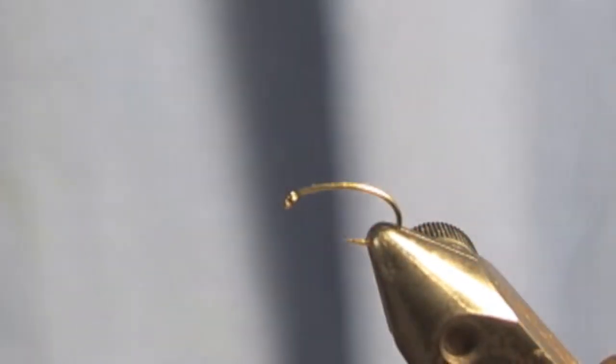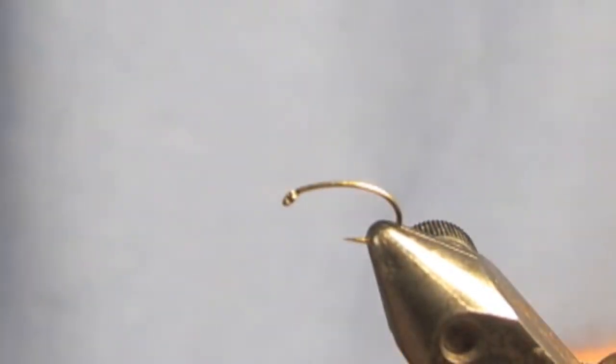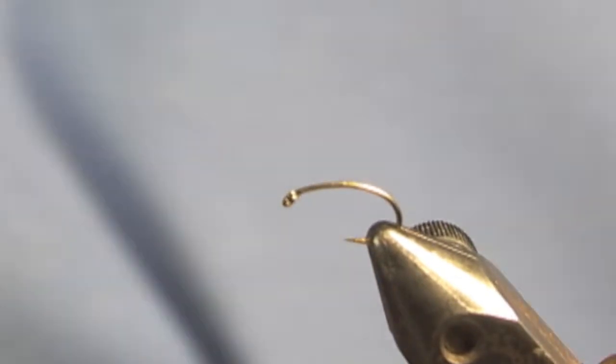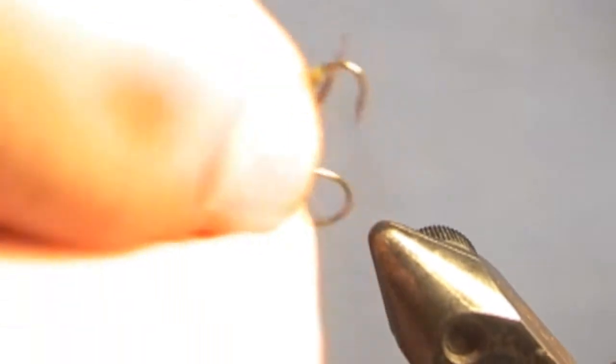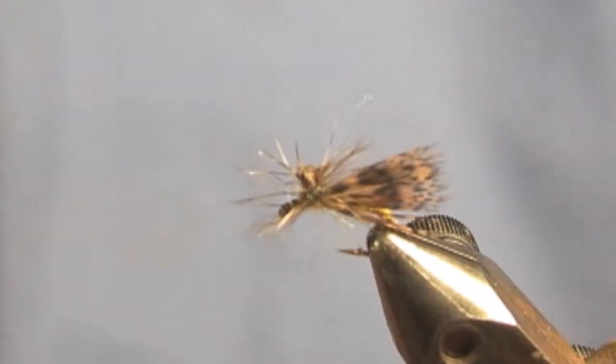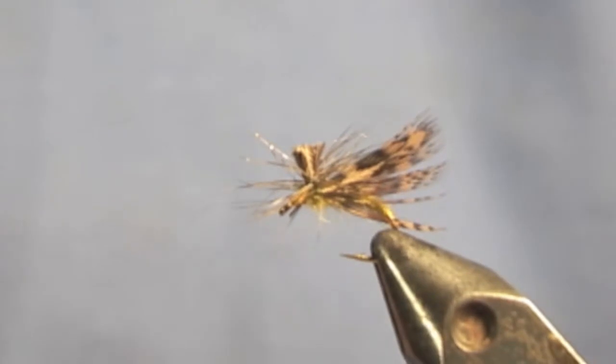I'm going to use green thread here. I'll put the sample one up first. I'm using a TMC 2487 Scud hook. We'll show the profile of that.